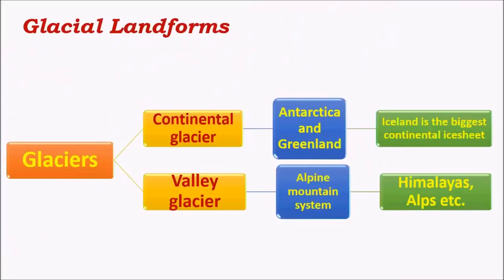The next important kind of landforms associated with the cycle of erosion are glacial landforms. A glacier is simply a moving mass of ice and there are two types mainly: continental glaciers and valley glaciers. Continental glaciers are found in regions like Antarctica and Greenland, where whole continents are completely filled with ice caps.